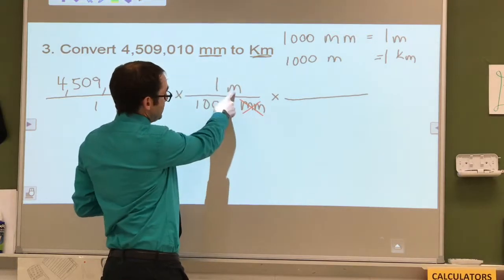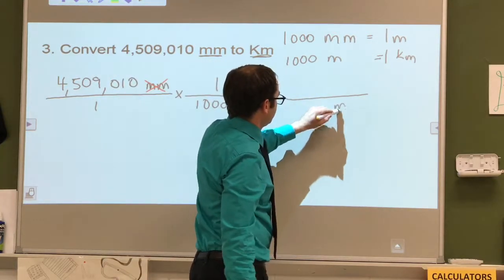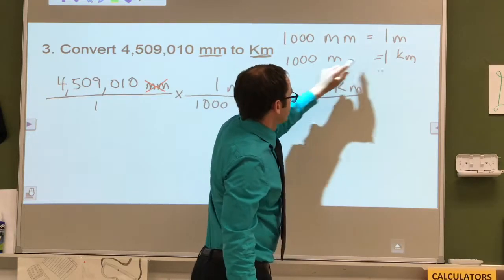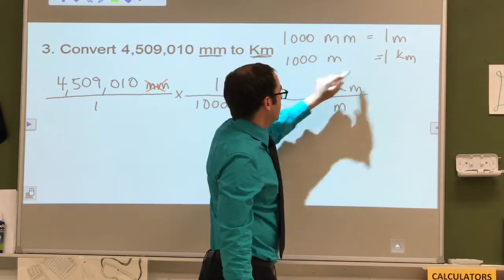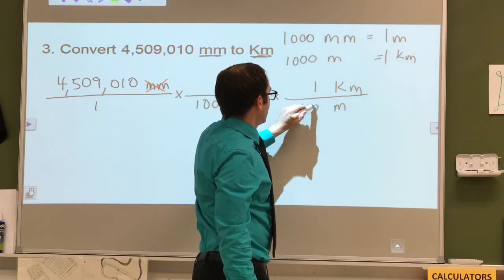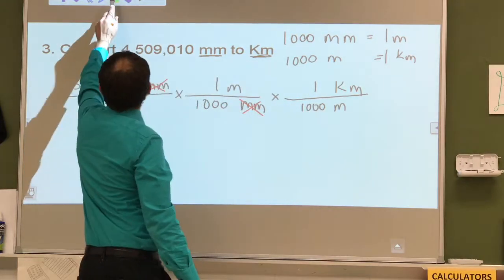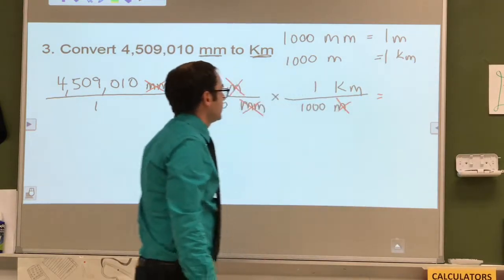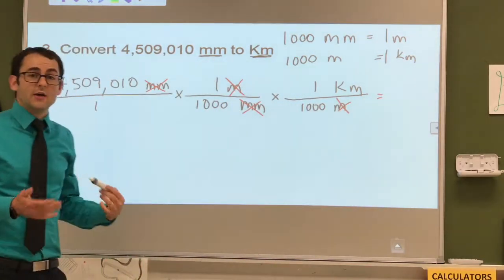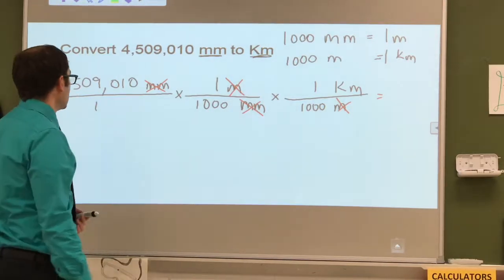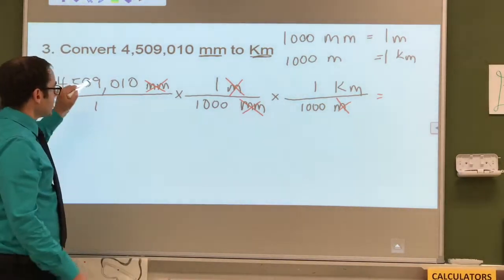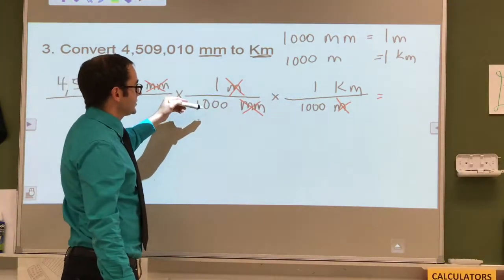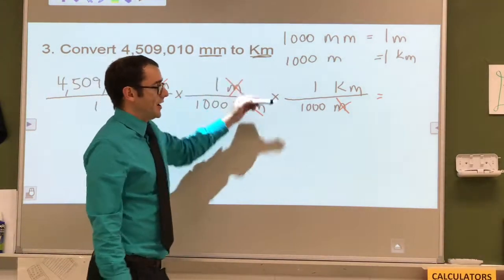And so now we have meters here, so we're going to put meters on the bottom. And we're looking for kilometers, so that's going to go on the top. And then we use our numbers from here. One kilometer, a thousand meters. Meters cancels out again. And now when we do the math, now we'll get the answer for this one. For this one, you're still multiplying across the top, getting an answer, and then divide it by a thousand, and then get an answer, and then divide it by a thousand.